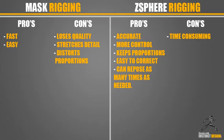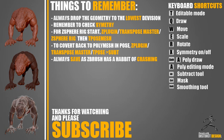Just to reflect on the two different types of rigging: there's the mask rigging, where the pros are that it's fast and easy, but the cons are that it loses quality, it stretches, and it distorts the proportions of the model. Then with the ZSphere rigging — it's accurate, you have more control over the shape, it keeps proportions as you move the arms and things around, it's easy to correct if something goes wrong, and you can always change the position to whatever you want at any point. The only con I could see with it is that it's time consuming. This is Instinct Design — over and out.